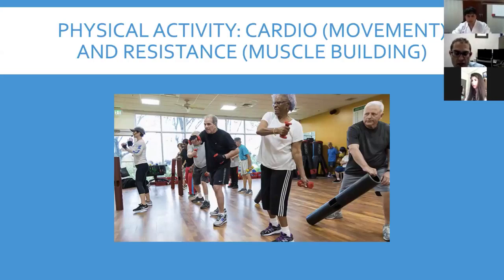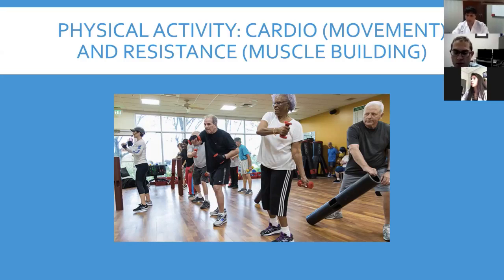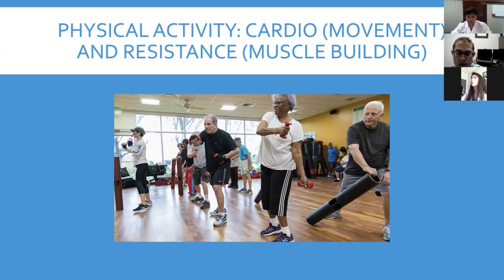Physical activity is extremely important for your health, especially for diabetics. Physical activity has two general components: cardio — movement like walking, cycling, jumping jacks — and resistance, which is muscle building. The fitness you develop in your cardiovascular system by doing regular movement activities helps all of your organs function more efficiently. Building muscle is very important because muscles have a central role in how your body handles blood sugar. The combination of these can impact the body's propensity to store adipose cells in the belly, lower inflammation, and improve how blood pressure and heart rate are controlled.